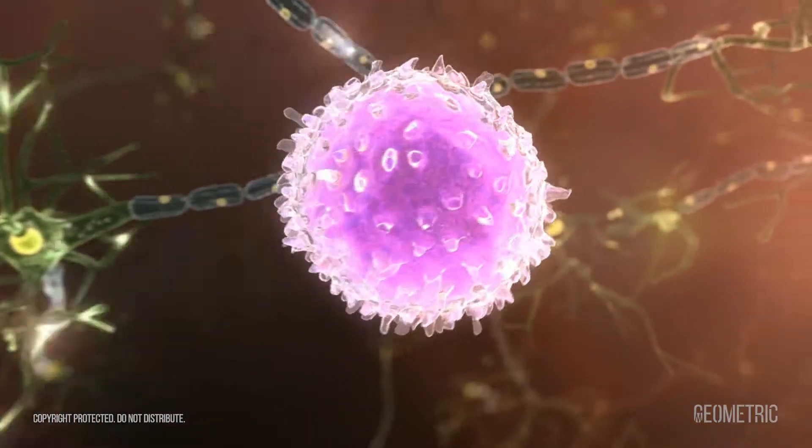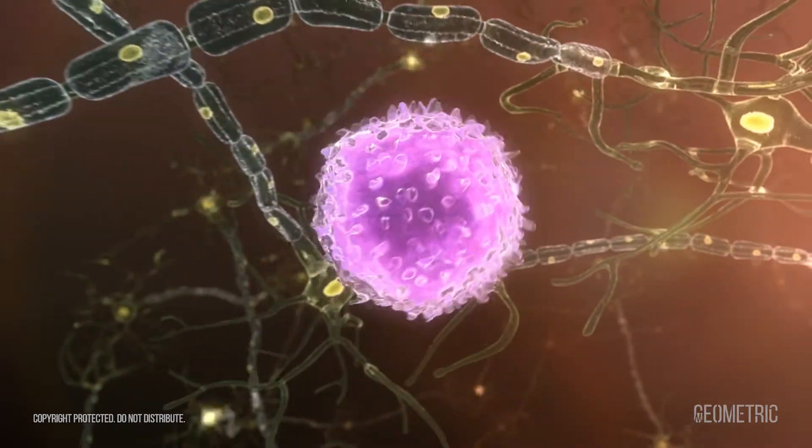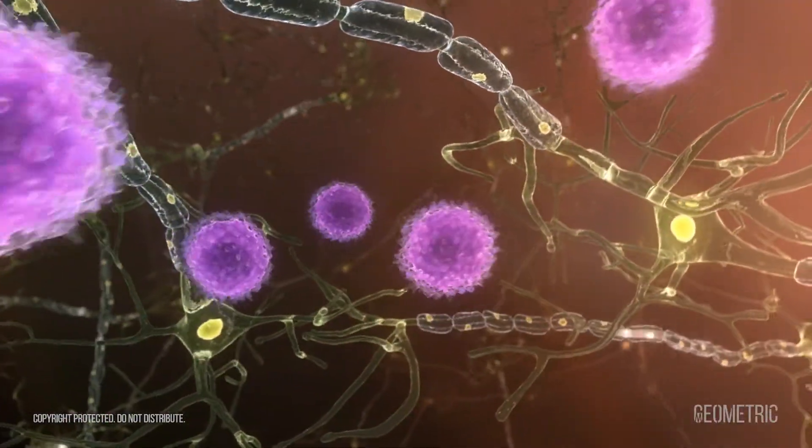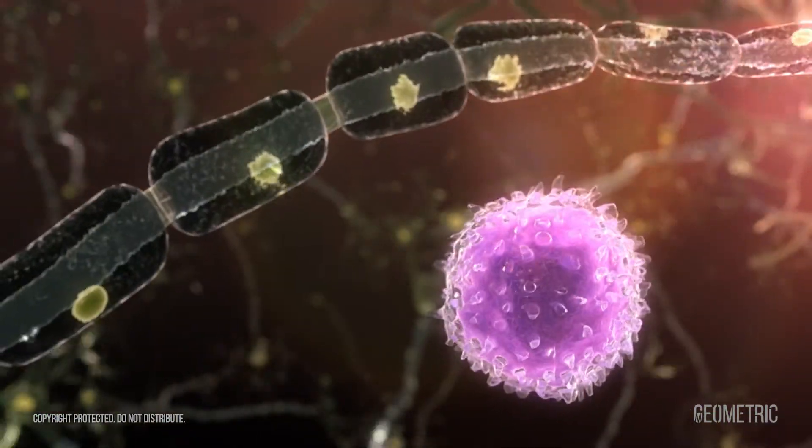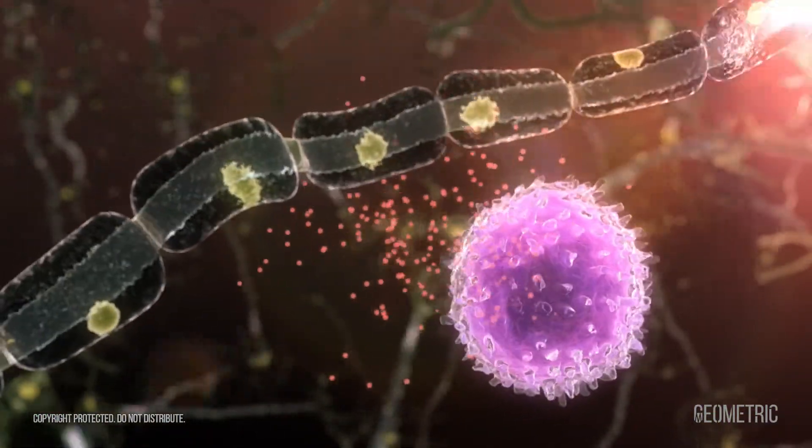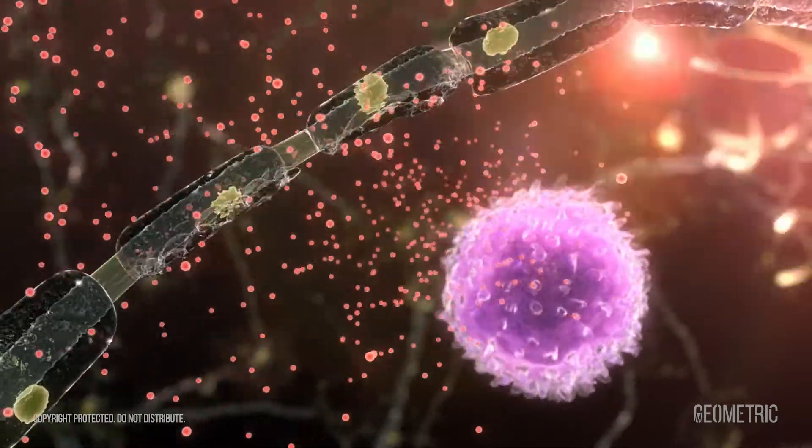Antigen specific receptors on the surface of t-cells recognize central nervous system myelin as an antigen. The t-cells attack the myelin that surrounds the axons. This causes the central nervous system to lose some of its ability to send signals throughout the body, causing the debilitating symptoms of MS.